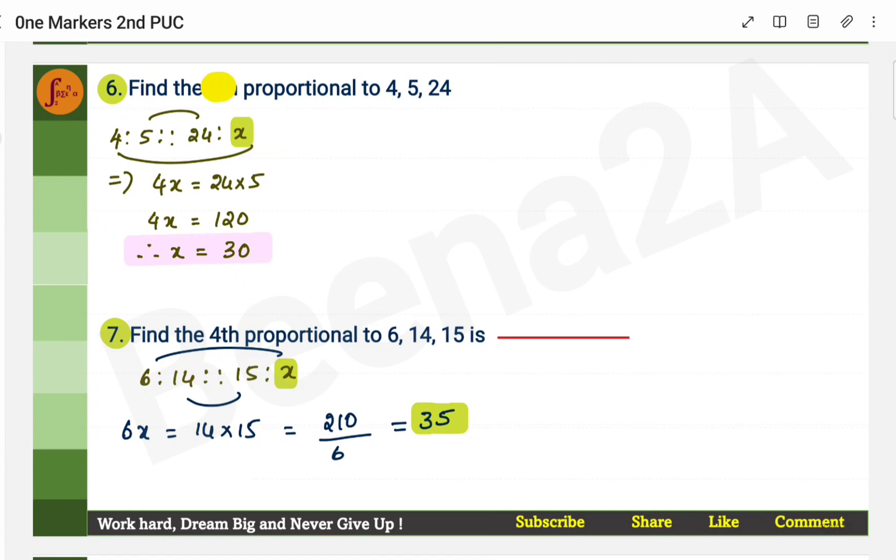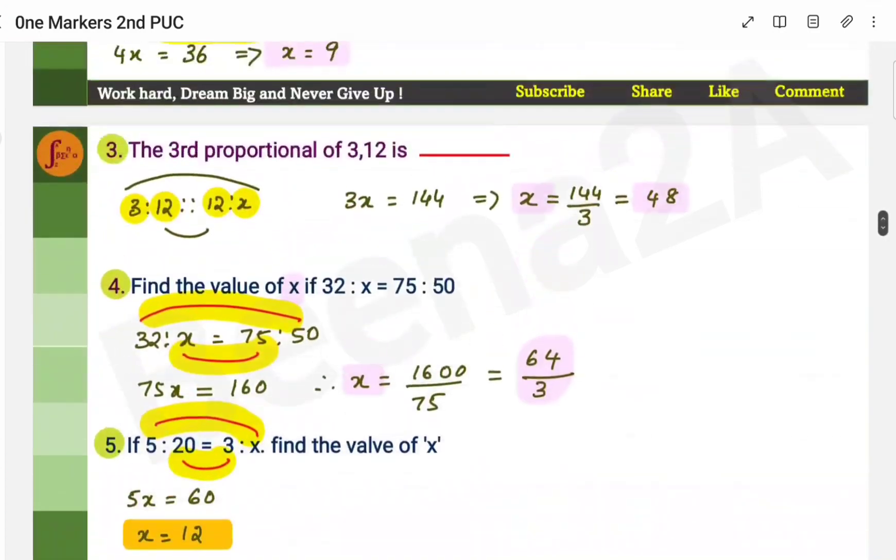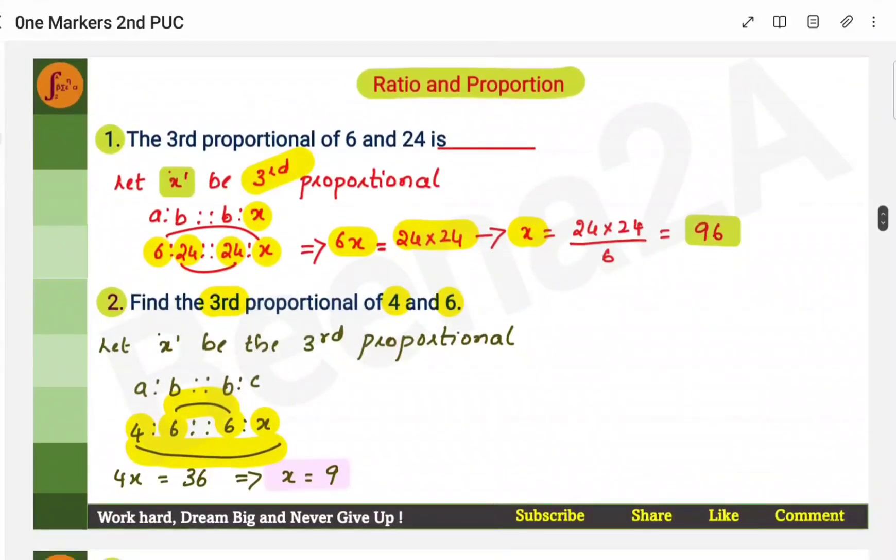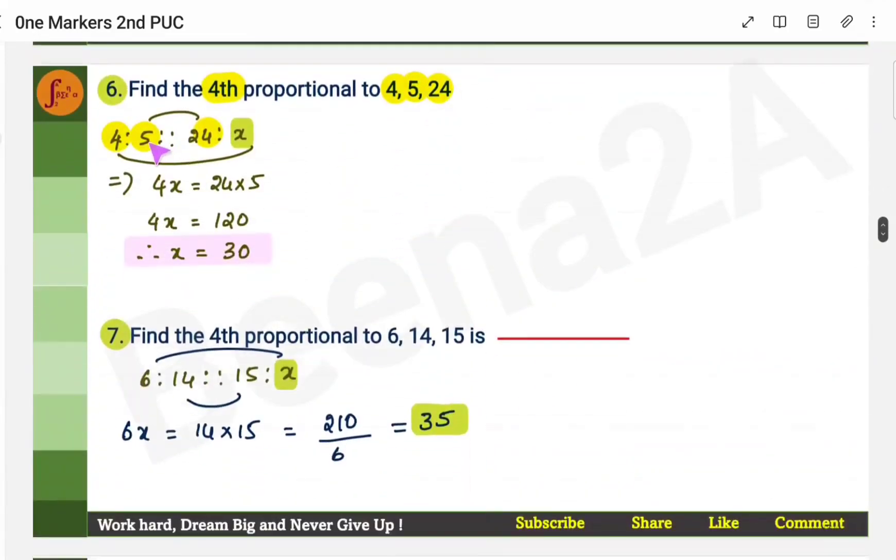Find the fourth proportional. Now, fourth proportional, here also you have to find the last term only. Only difference is, here you have all three terms given. 4, 5, 24, fourth term you have to find. Now this is the difference between third proportional and fourth proportional. In third proportional, the middle two terms are same. If you notice, in third proportional, middle two terms are same. But in fourth proportional, the middle terms are different.